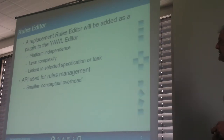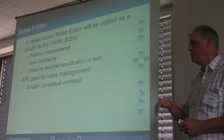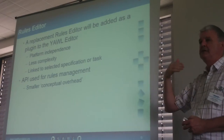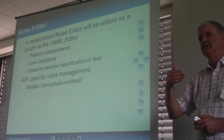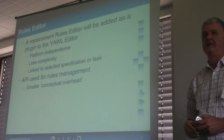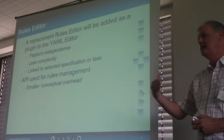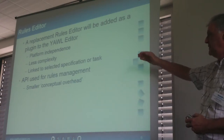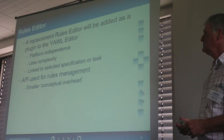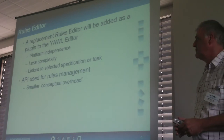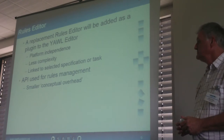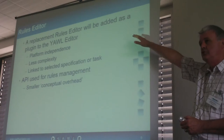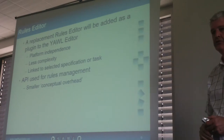A replacement rules editor will be added to the next YAWL Editor, offering platform independence. It will be less complex because you don't actually need to know Ripple Down Rules or access what happened in past selection processes to add a rule. It will be linked directly to whatever is going on in the editor at the time, and rules management will be done entirely through the API rather than talking to the worklet service directly.